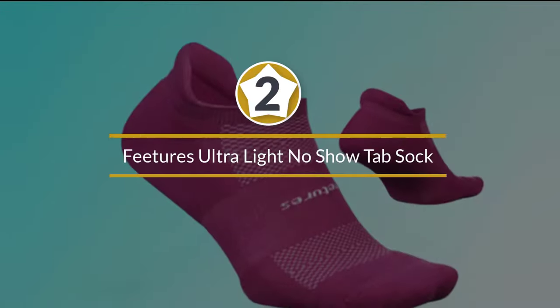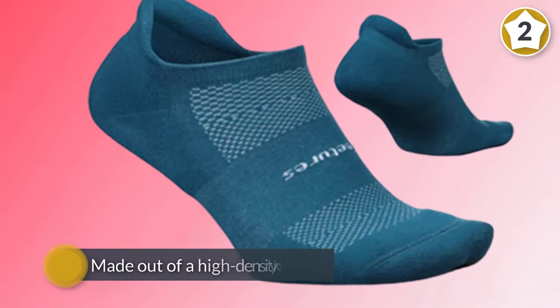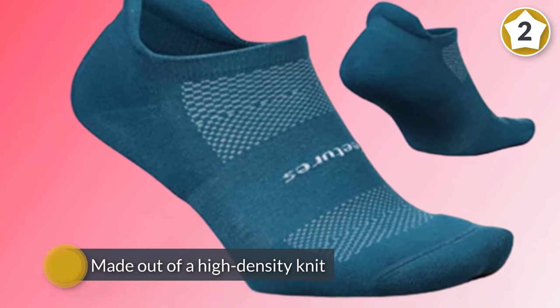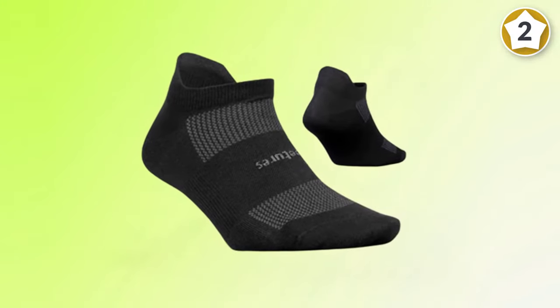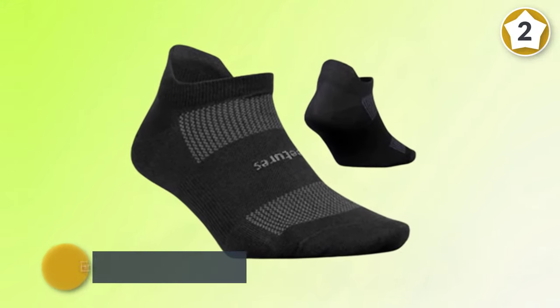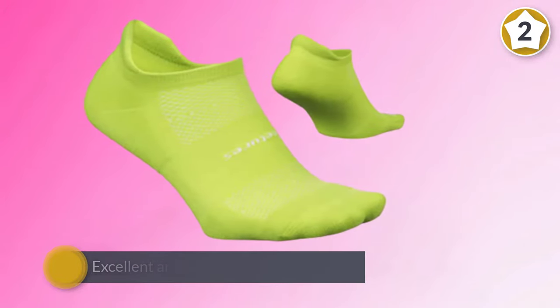Number two: Features Ultra Light No-Show Tab Sock. These socks are made out of a high-density knit blend of polyester, nylon, and spandex, so they are snug and resilient, conforming well to your feet with zero stretching out even during hours of use. A power band of added lycra around the center of the sock offers excellent arch support and compression.